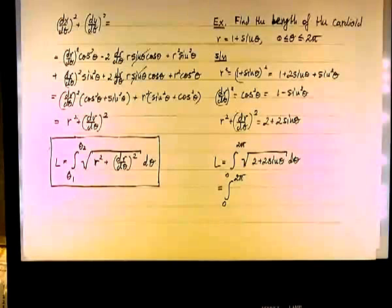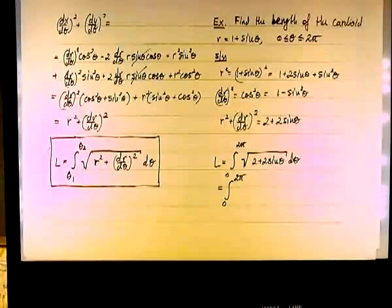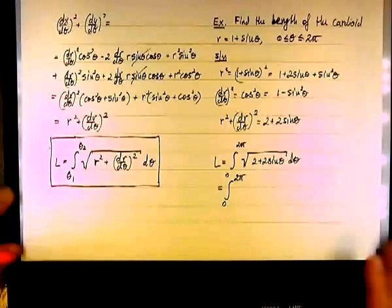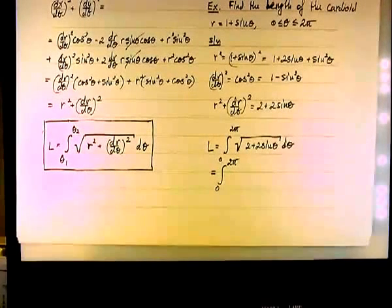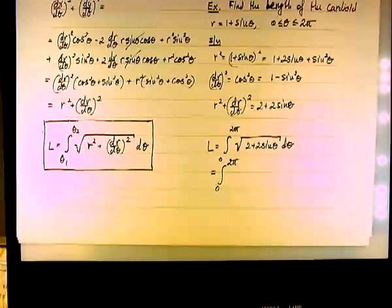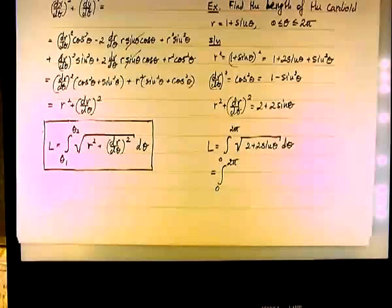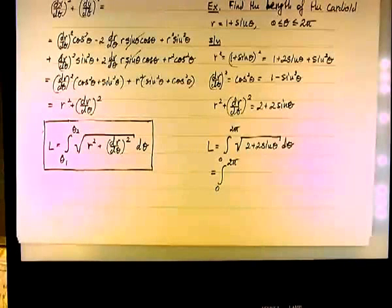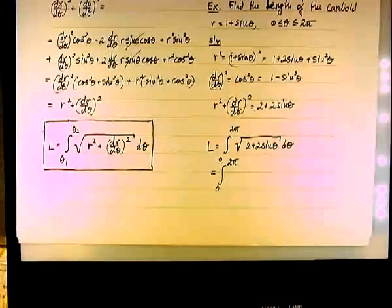We can factor out to get square root of 2 times square root of 1 plus sine theta, but we are back into a form — square root of 1 plus sine theta — for which we don't have a recognizable pattern or technique. If we had a sine squared inside the radical we could work with it, complete the square, but we don't. So factoring out doesn't do us any good here.